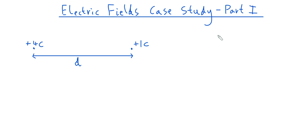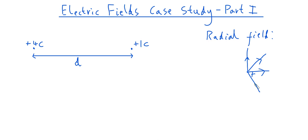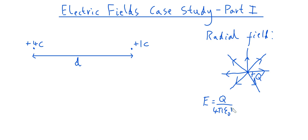Consider two positive point charges: a 4 coulomb charge and a 1 coulomb charge, separated by a distance d. Recall that if we were looking at just a single positive point charge, the field due to such a charge would be a radial field — electric field lines propagate outwards in all directions. The electric field strength for a radial field is given by kq over r squared, where r is the distance from the charge. I'm going to call 1 over 4 pi epsilon 0 equal to k to save time.